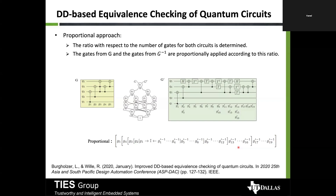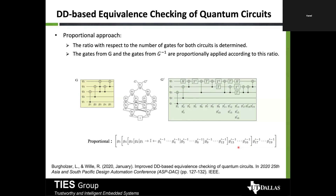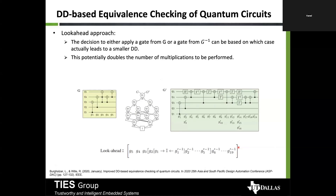The second method is the proportional strategy: you look at the gate proportions of both circuits and apply them in proportion. For example, G has five gates and G' has 19 gates — roughly a 1:4 ratio. So you apply G1 alongside G1' through G4', G2 alongside G5' through G8', G3 alongside G9' through G12', and so on. This performs well for some cases but not all.